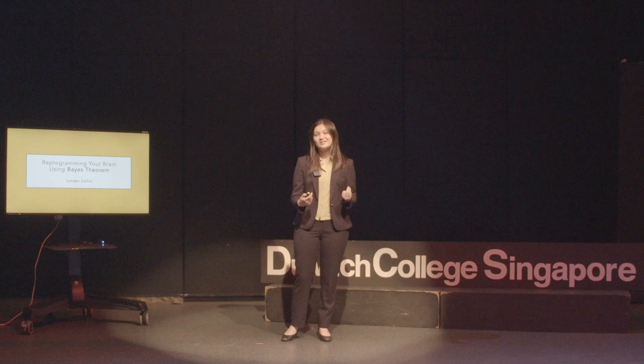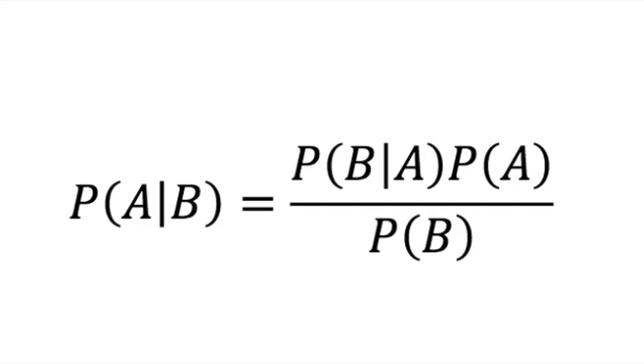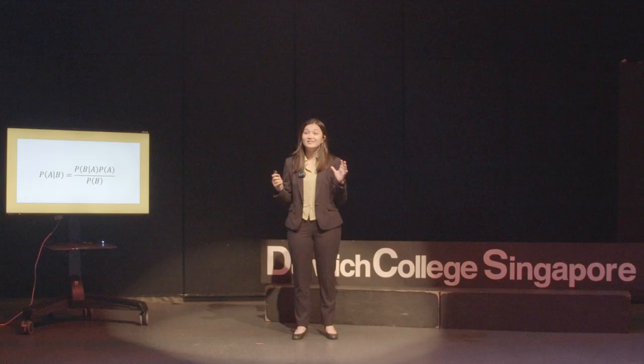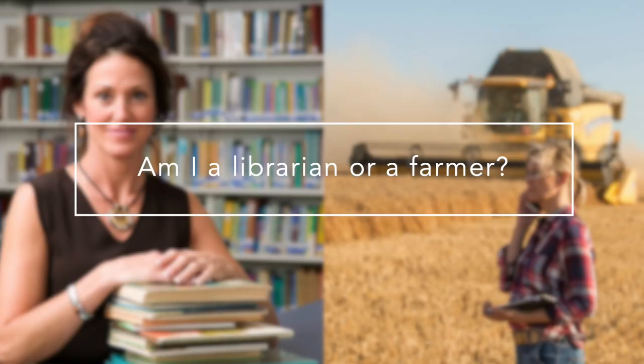So that you can become what we call a Bayesian thinker, which means thinking more logically. Now, no more suspense — I'm just going to give you a quick look at what the theorem looks like. Please don't worry, I know it looks kind of complicated and most people might not know what this means. It's okay — I'll break it down for you. But first, let's play a game.